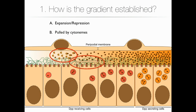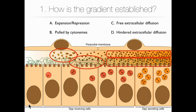The second model proposed by Kornberg describes cytonymes — long protrusions that come from the sides of the wing disk, reach the morphogen, and have receptors on them so they can transduce the signal. The last two models are free extracellular diffusion, where the morphogen is secreted and moves freely until it reaches the receptor, or hindered diffusion. Given that the wing disk is a very tightly packed set of cells, all the glypicans and receptors on the outside will hinder DPP diffusion, and measurements have shown that DPP diffuses at a very slow speed to be considered free diffusion.